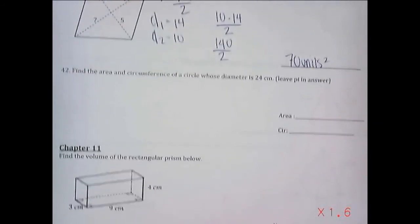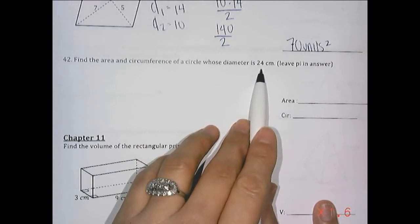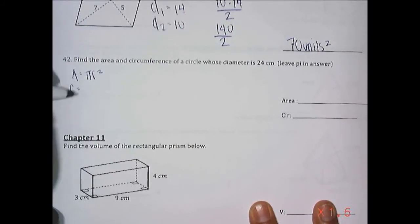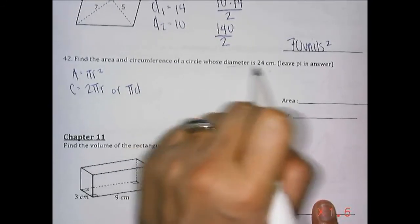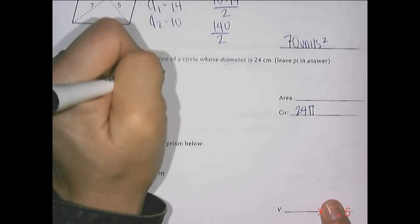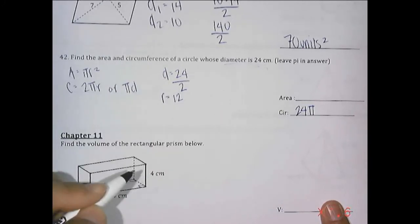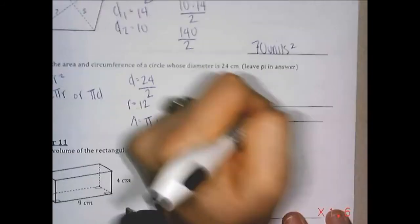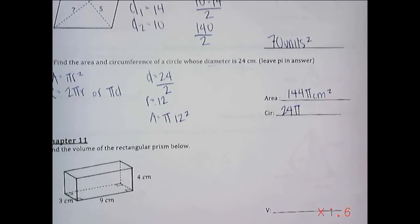The last one: find the area and circumference of a circle with diameter 24 centimeters, leaving pi in the answer. For circumference, using pi times diameter: 24 pi. Since diameter is 24, radius is 12. For area, pi times radius squared: pi times 12 squared equals 144 pi centimeters squared.